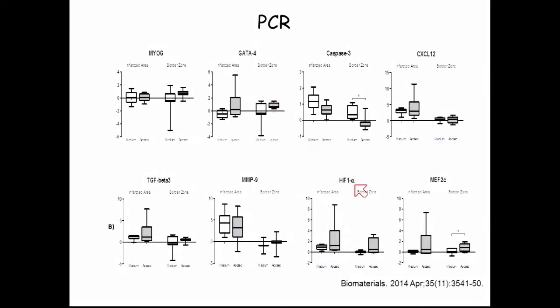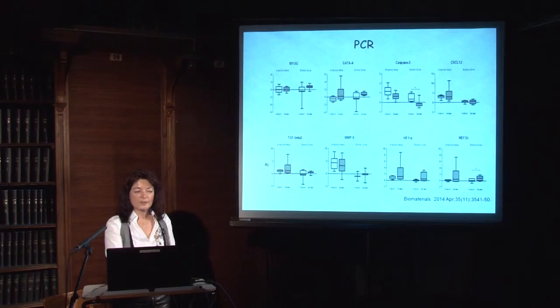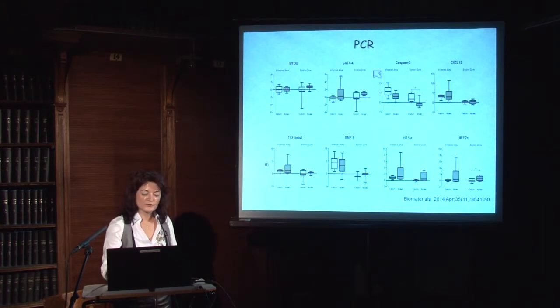Interestingly, we found no difference between the two groups regarding CXCL12, TGF-beta3, or MMP9, and only a very small change in HIF-1 alpha. However, all these measurements were done one month after EPISEC injection — meaning the EPISEC effect was preserved even one month later, and apoptosis was still significantly decreased in EPISEC-treated animals at that time point.